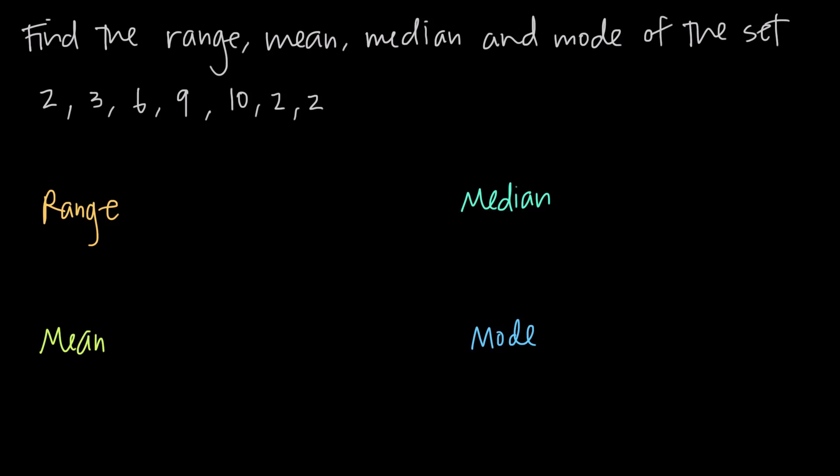In this video we're talking about how to find the range, mean, median, and mode of a set of numbers. In this particular problem we've been given the set of numbers 2, 3, 6, 9, 10, 2, and 2. So we have 1, 2, 3, 4, 5, 6, 7 numbers in our set, and we need to find the range, mean, median, and mode.